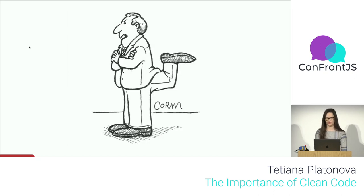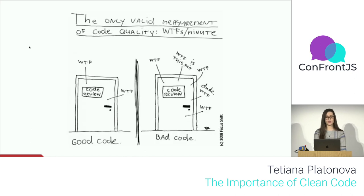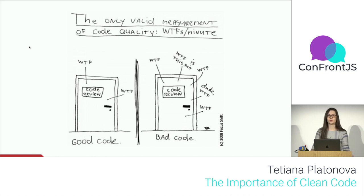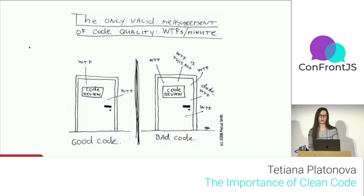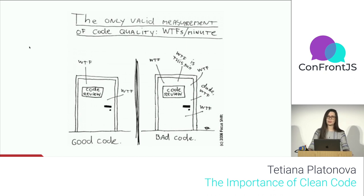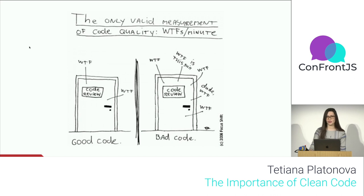Today we're going to learn how to not become that person who blames himself. The first person who needs you to write good code is yourself — your future self. The second reason is that we usually work on projects as a team, which means at some point somebody else will work on code we wrote, or we'll go through a code review and somebody else will read our code.